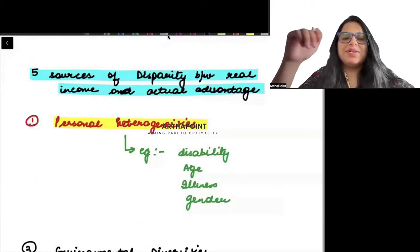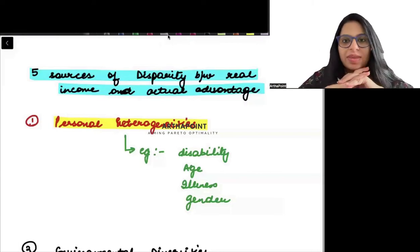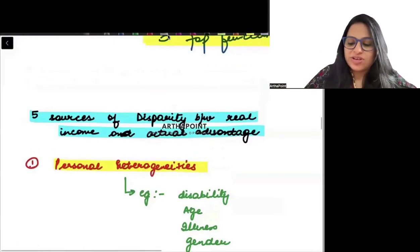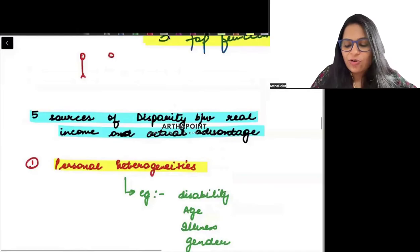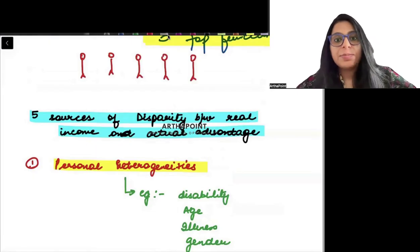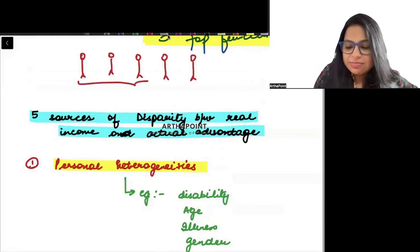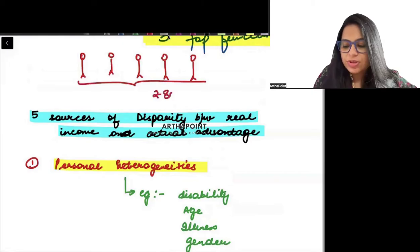See, this is very common. Imagine that there are five employees. This is one example. Five people working in the same company, same profile, earning the same money, Rs. 80,000 per month.